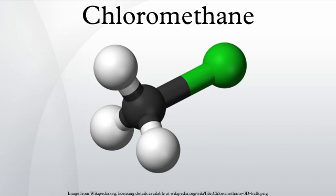Further reaction of chloromethane with chlorine can produce dichloromethane, trichloromethane, and tetrachloromethane. Chloromethane was a widely used refrigerant, but its use has been discontinued due to its toxicity and flammability. It was also once used for producing lead-based gasoline additives. The most important use of chloromethane today is as a chemical intermediate in the production of silicone polymers. Smaller quantities are used as a solvent in the manufacture of butyl rubber and in petroleum refining.